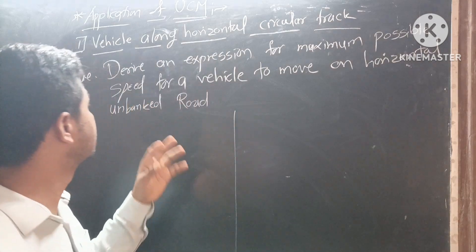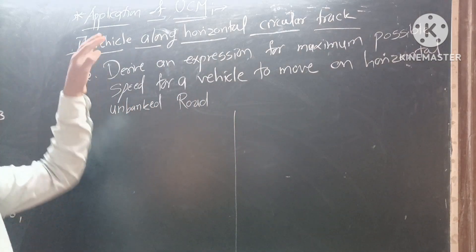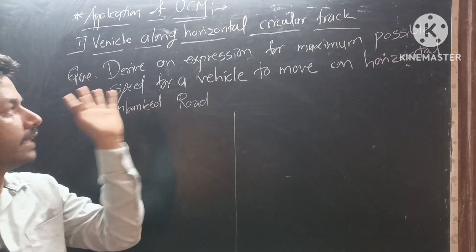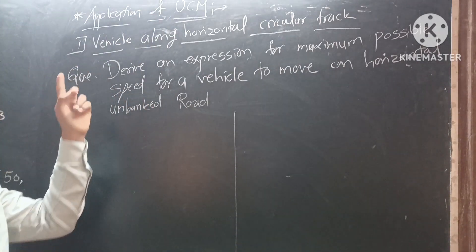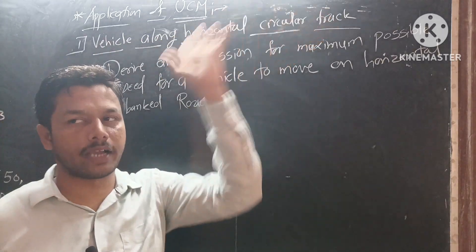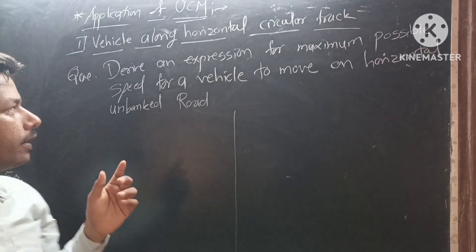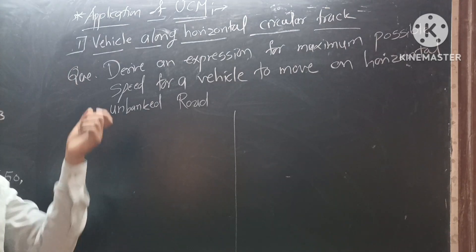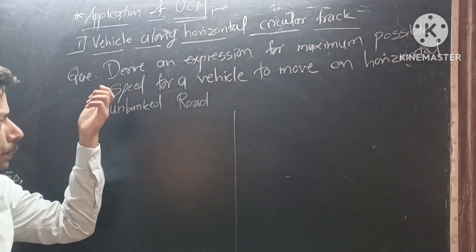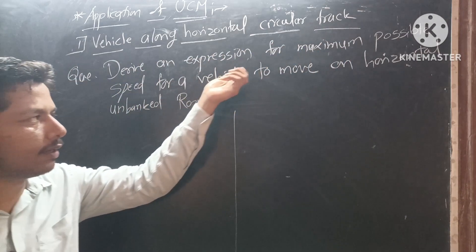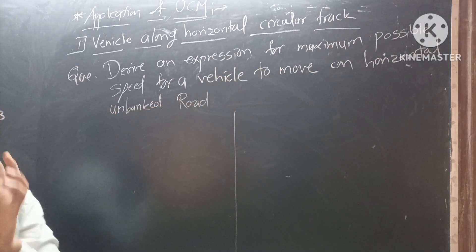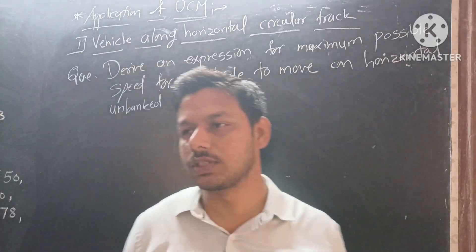The next point is a very important application of uniform circular motion. In our syllabus, there are four applications. First application is vehicle along horizontal circular track. The question asks to derive an expression for maximum possible speed for a vehicle to move on horizontal unbanked road, classic road, and banked road.